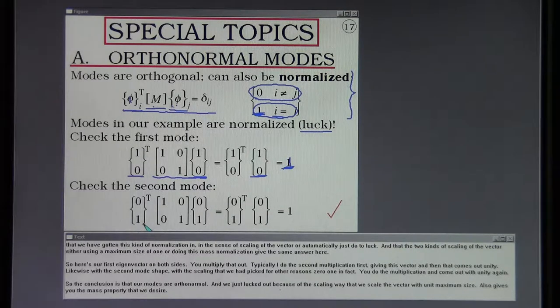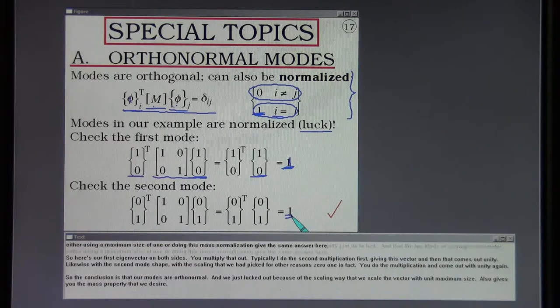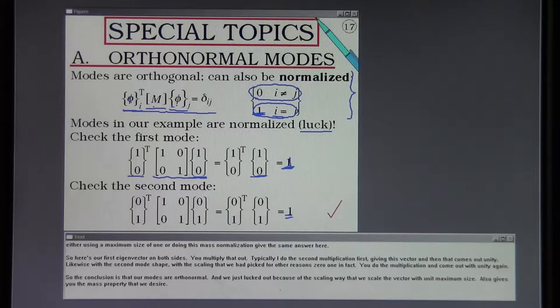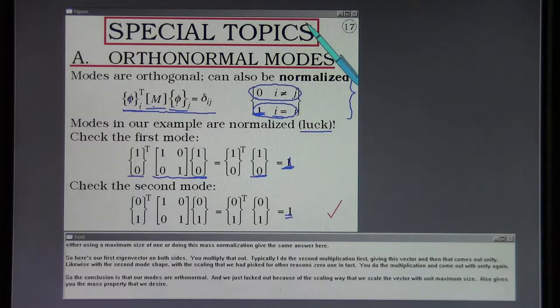Likewise with the second mode shape with the scaling that we had picked for other reasons, zero, one in fact, you do the multiplication you come out with unity again. So the conclusion is that our modes are orthonormal and we just lucked out because the scaling way that we scaled the vector with unit maximum size also gives you the mass property that we desired.